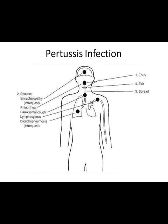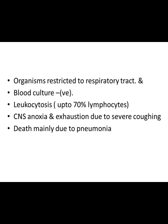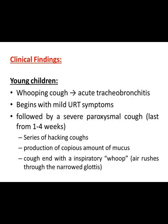This diagram shows the entry, exit, spread, and disease caused by the organism. Clinically, it is acute tracheobronchitis beginning with mild upper respiratory tract symptoms, followed by severe paroxysmal cough lasting one to four weeks. There are series of hacking coughs with production of copious amounts of mucus, with inspiratory whoop — air rushes through the narrowed glottis producing the whooping sound.